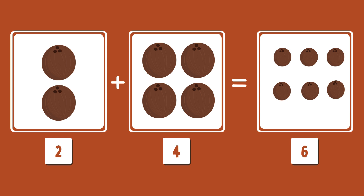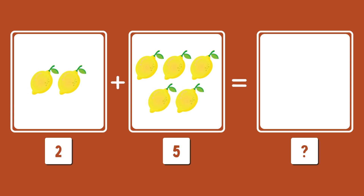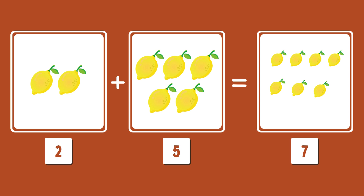Pat your back! Now I have got two lemons and five more lemons with me. How many total lemons do I have? The right answer is seven lemons. Good job, kids.